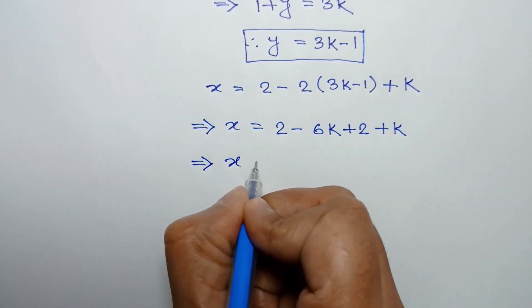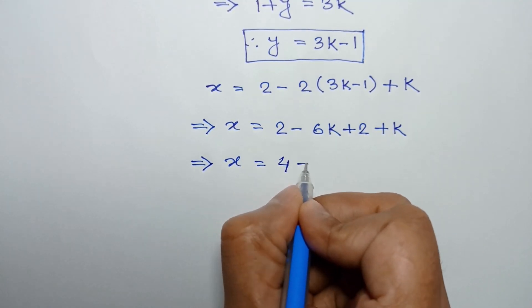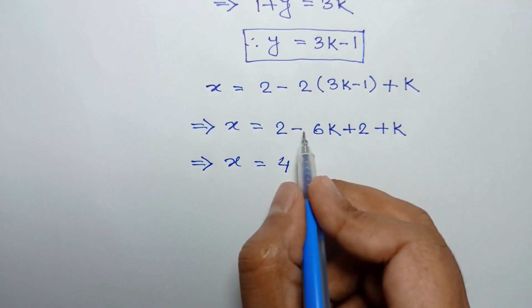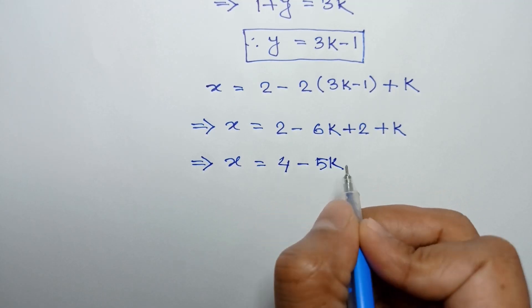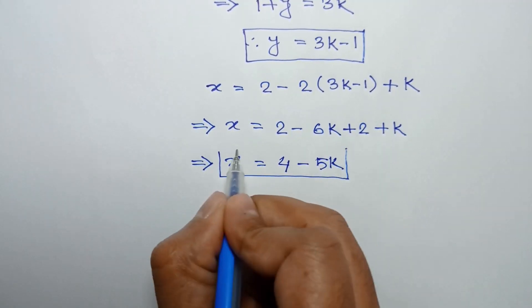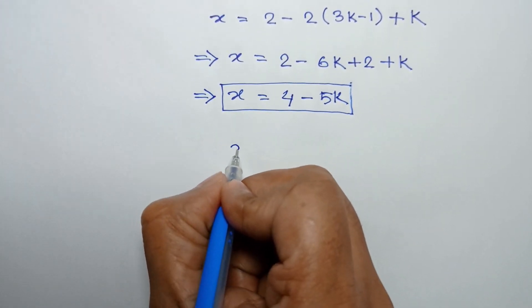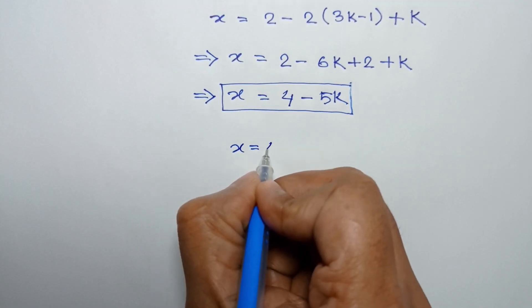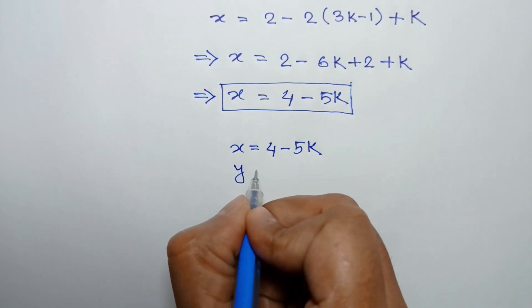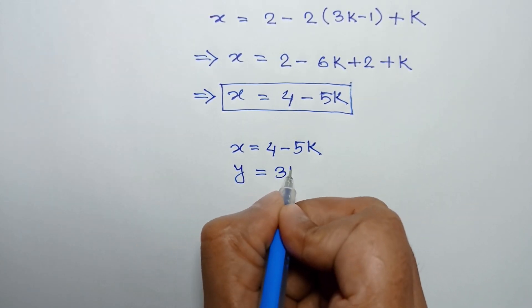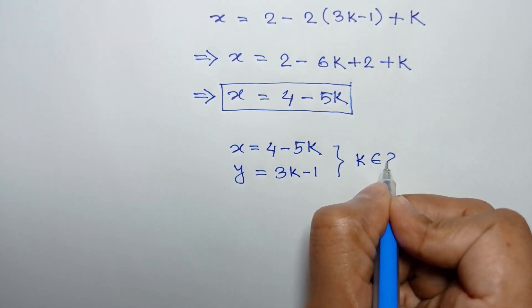So x = 2 + 2 - 6k + k, which gives x = 4 - 5k. In general, the solution is x = 4 - 5k and y = 3k - 1, where k is any integer.